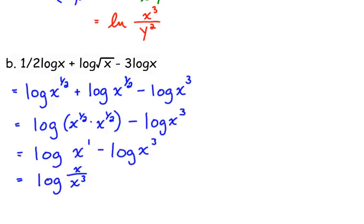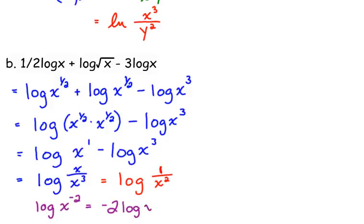When we're subtracting, it becomes a quotient — dividing. We've got x in the top and in the bottom, so we simplify by subtracting exponents. One minus three is negative two, so it goes in the denominator. Or you can look at it as three minus one is two — put it where it was bigger, which was the bottom. The answer is the log of 1 over x squared. You may also see this written as negative two log of x — those are the same answers, they are equivalent. Just use the power rule again.